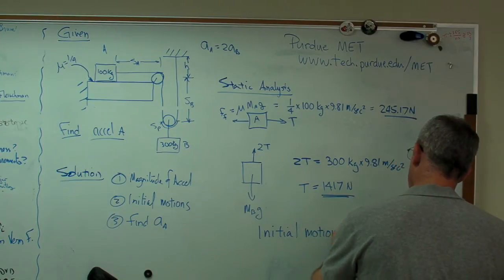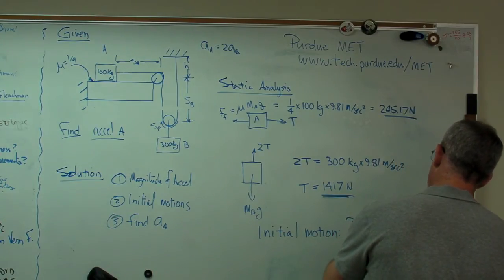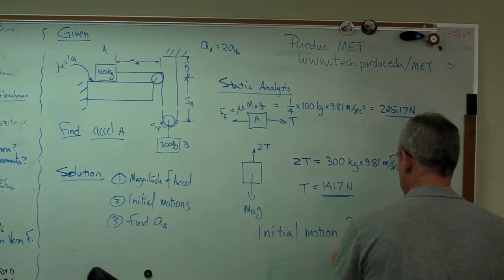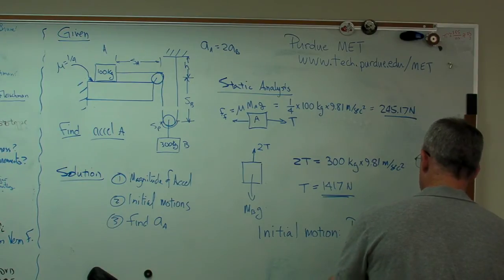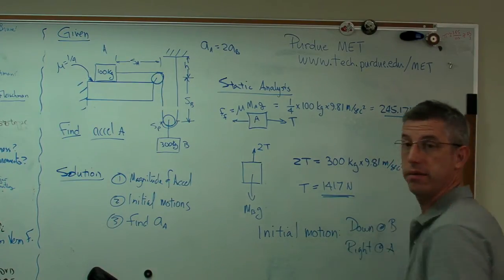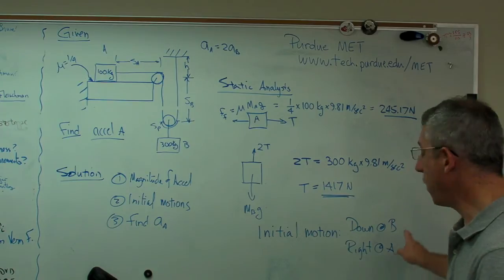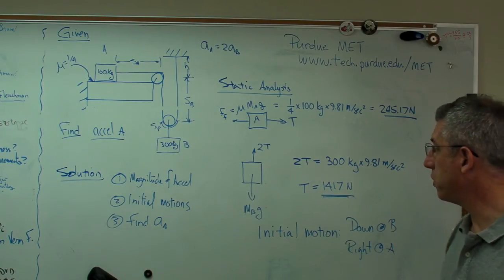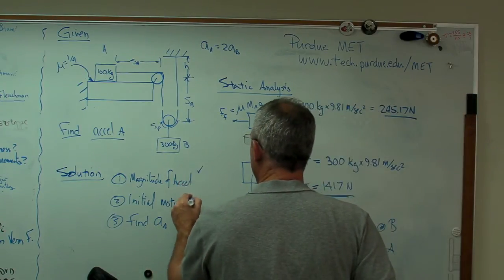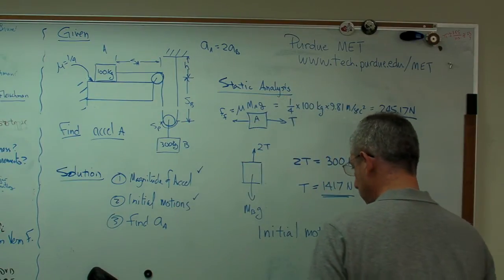That's the tension that this applies to the rope just sitting there where we just released from static motion. Because this number is bigger than this number, initial motion is down. Down at B and to the right at A. That's important. So now we know this. We've got the directions of the motion worked out.